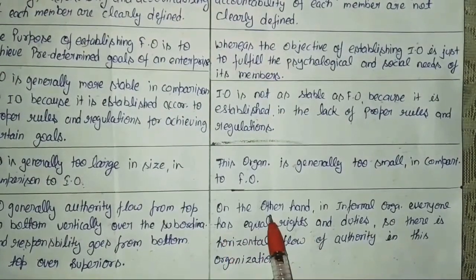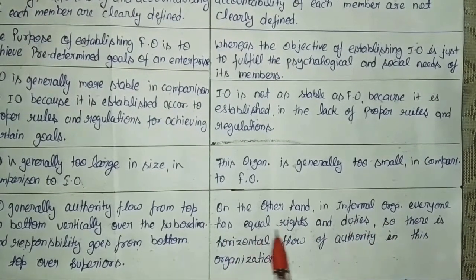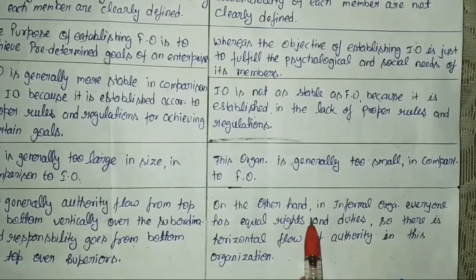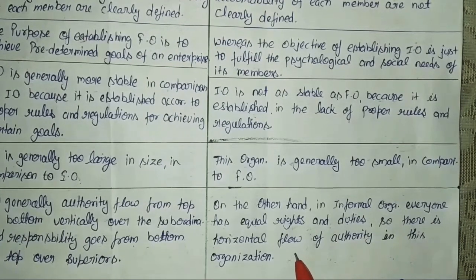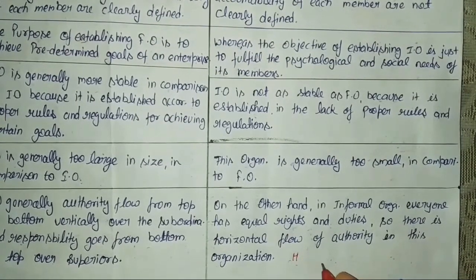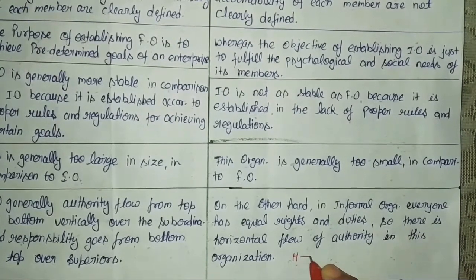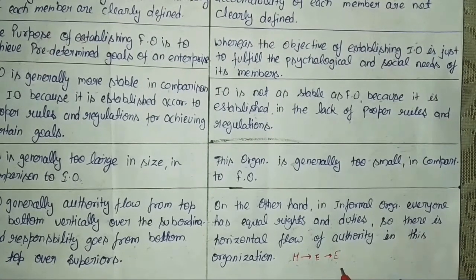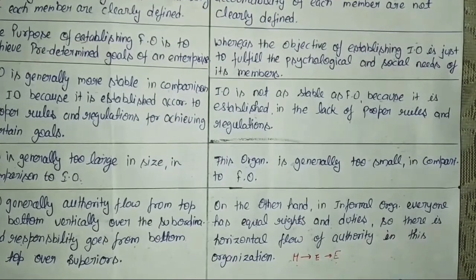In informal organization, everyone has equal rights and duties, so there is a horizontal flow of authority. In informal organization, there is no superior-subordinate concept — everyone behaves like friends. The flow here is horizontal; no one has authority to give orders to others. All employees are equal, they share their feelings and emotions like friends, and there are no limitations or bindings. Rights and duties of everyone are equal.